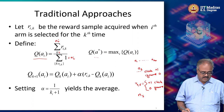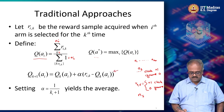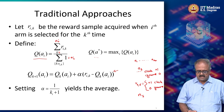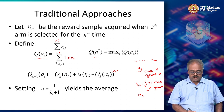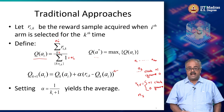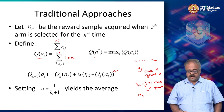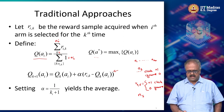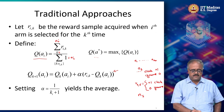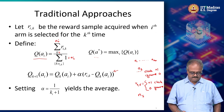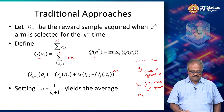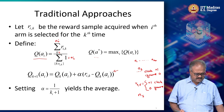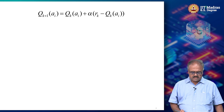Yes — the expression for the incremental update is: q_{k+1}(a_i) = q_k(a_i) + (1/(k+1)) * (R_{ik} - q_k(a_i)). Here q_k(a_i) is the estimate when I get the k-th reward, and R_{ik} is the k-th reward. Let me go to the next slide to derive what this expression means.